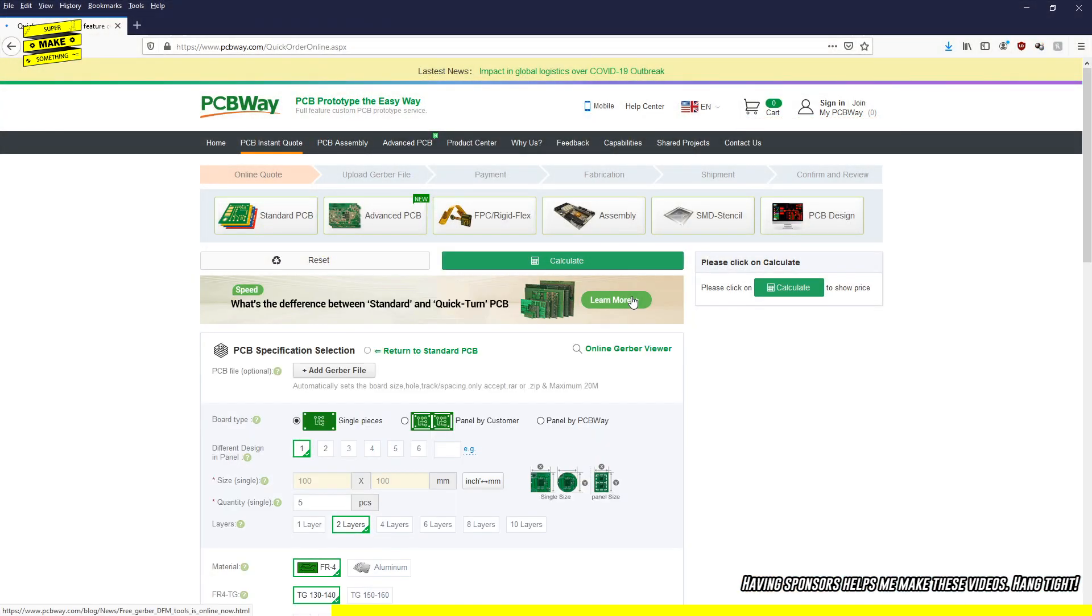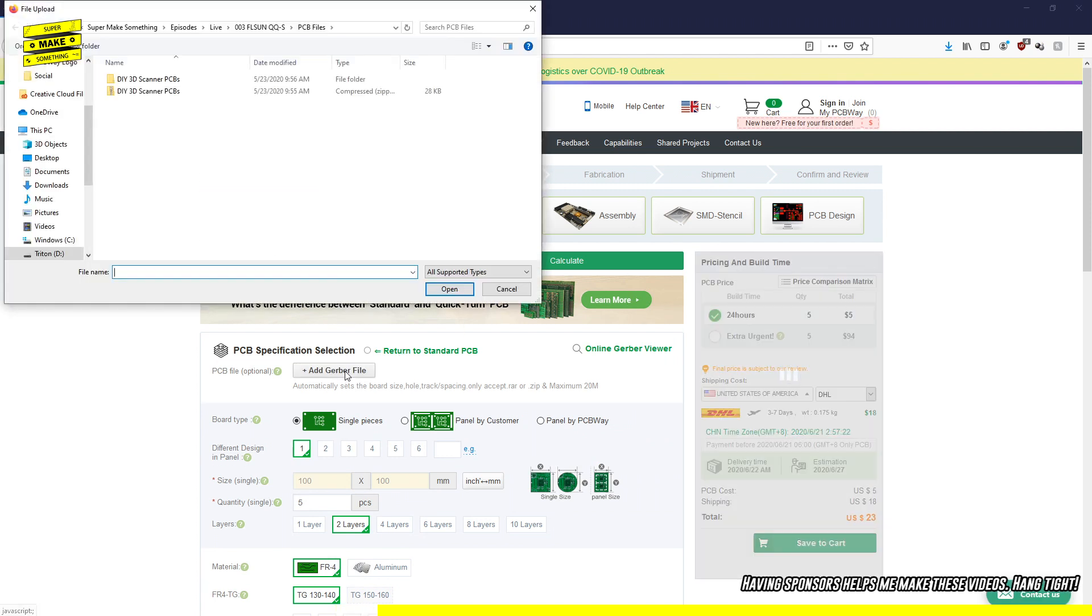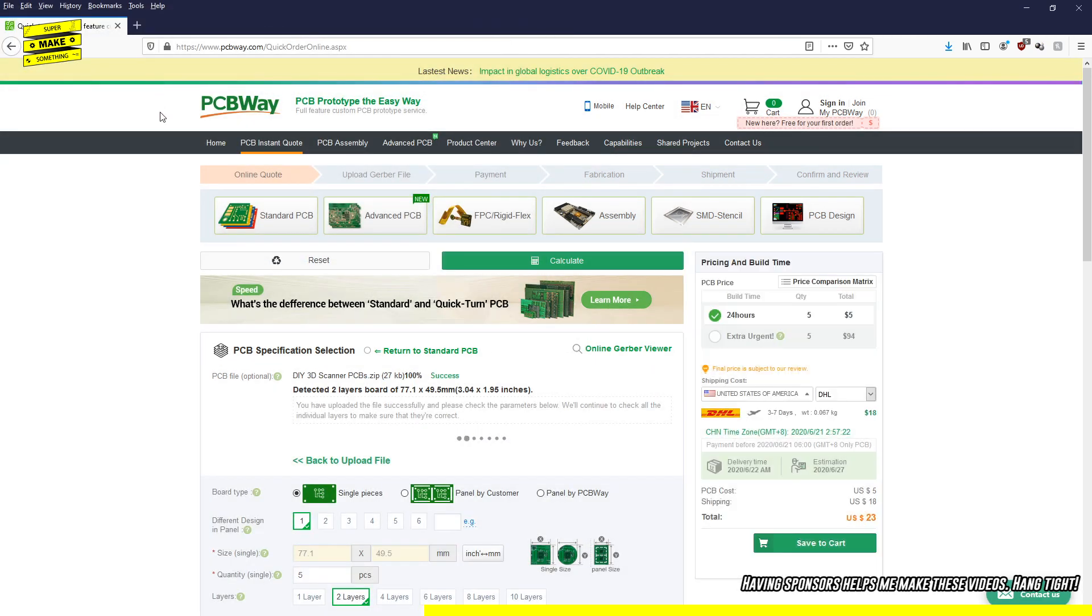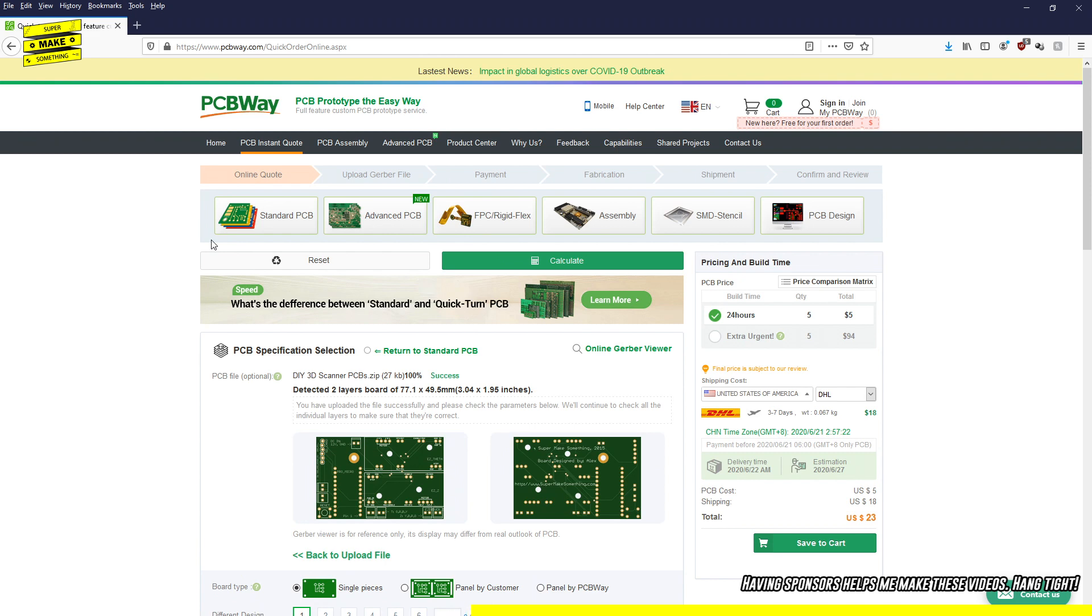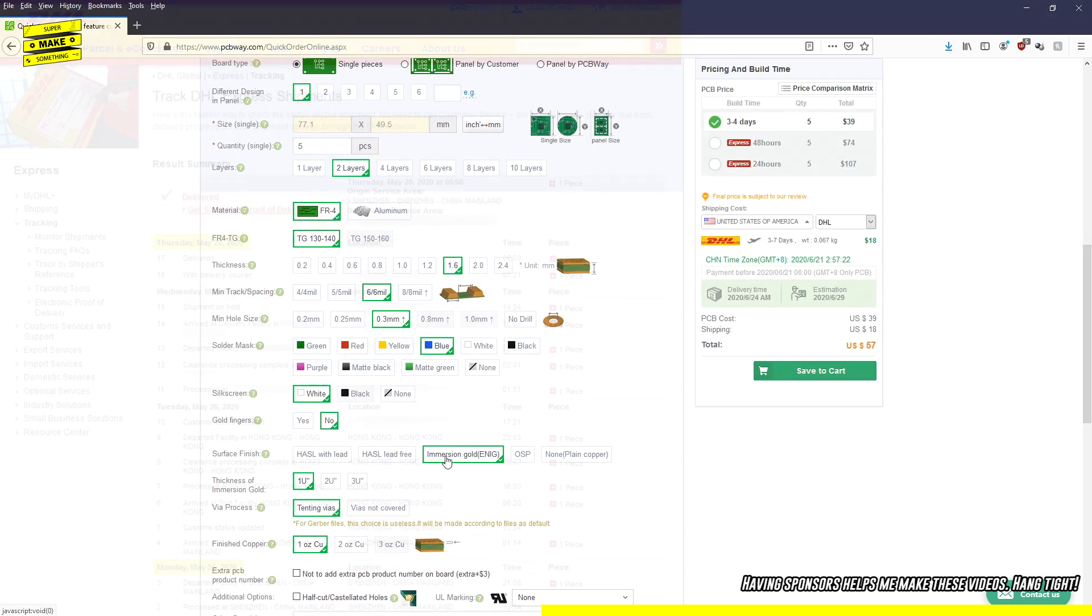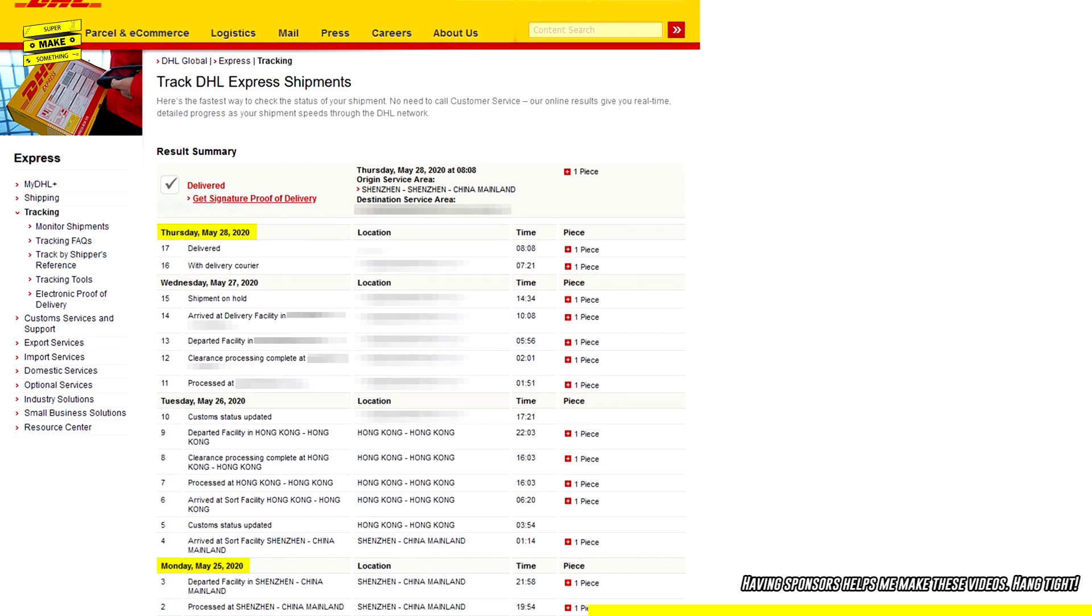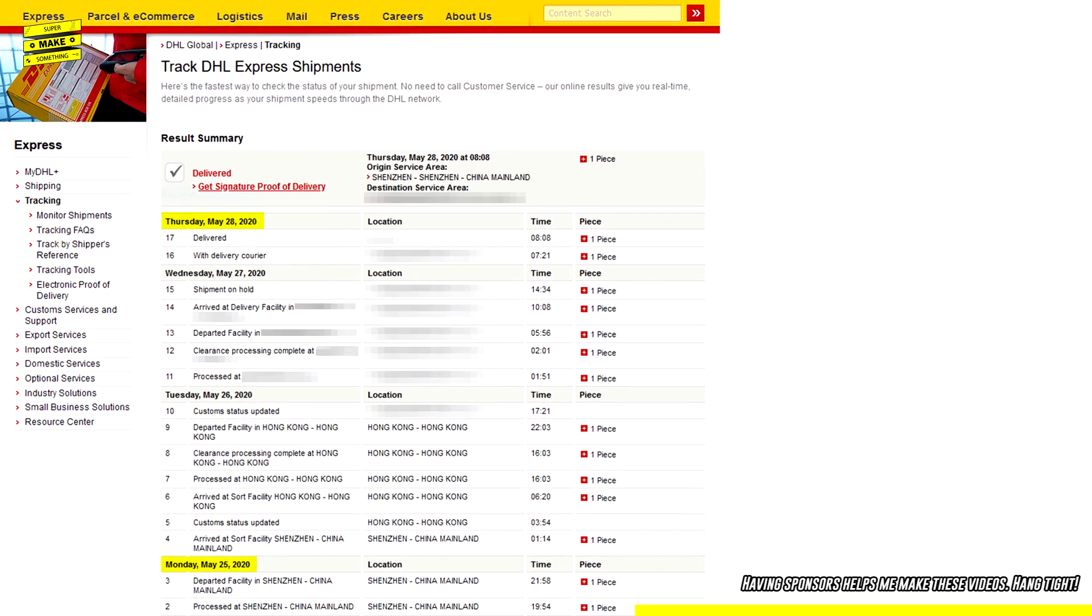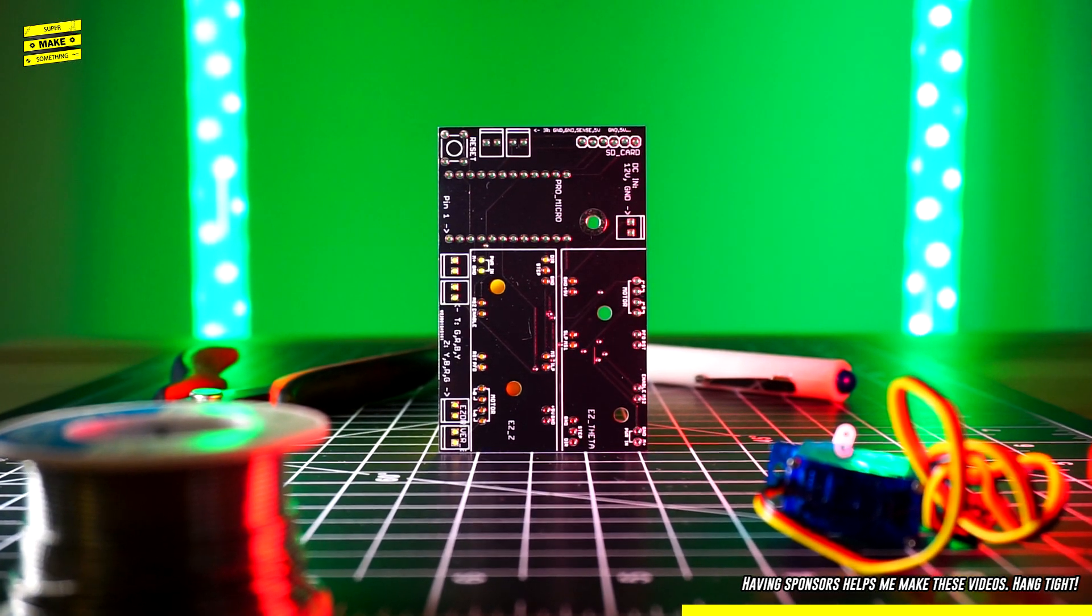Getting your board manufactured is incredibly easy, thanks to their online system that populates board parameters automatically from uploaded Gerber files, after which you can continue to customize options to your liking. PCBs that I've ordered for my projects have typically always arrived within less than a week, and the quality of the boards has always been top-notch.